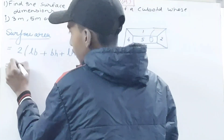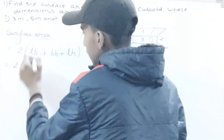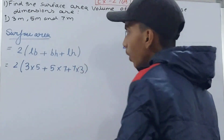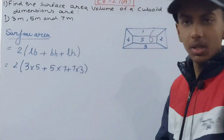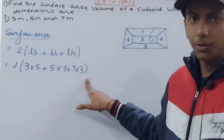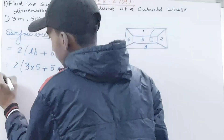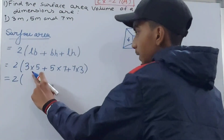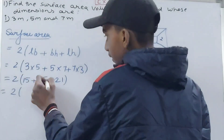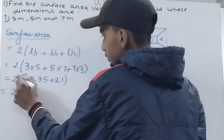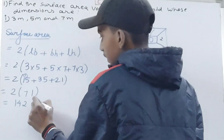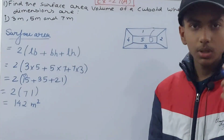Now put the values: 2 × (l×b + b×h + l×h) = 2 × (3×5 + 5×7 + 7×3) = 2 × (15 + 35 + 21) = 2 × 71 = 142. The unit of surface area is square meters, since area is always in square units. So the surface area is 142 square meters.